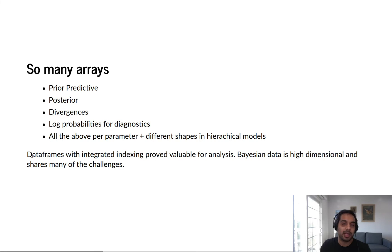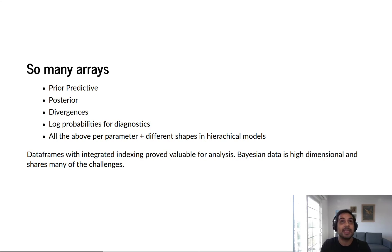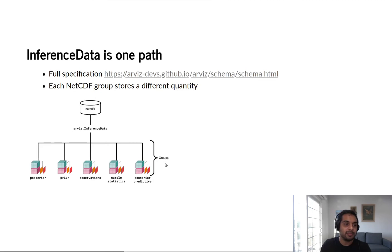Data frames were particularly helpful with tabular 2D data for indexing, slicing, and referring to columns. Bayesian data is just more dimensions on top of that and more arrays on top of that. We know that Bayesian data is higher dimensional and has many of the same challenges for the end user in terms of index slicing and referencing any one of the samples that can come from any one of these arrays. Inference data is our answer to that.